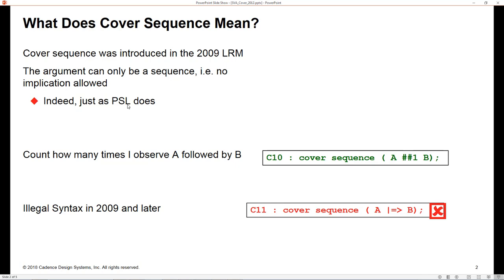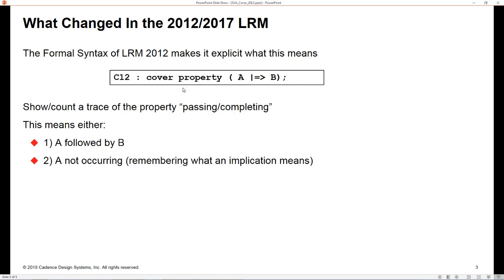So what does the change mean then? From the 2012 version of the language reference manual, if you say a property as shown here in C12, this will give you an indication that the property was covered or it passed or completed, whatever the terminology your tool uses, if A was followed by B. Yes, that's what we're expecting. However, it should always indicate a pass if it follows the LRM when A never occurs.